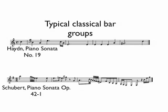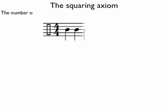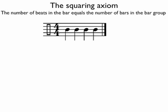But his observations led him to speculate about the logical consequences of using power series in music. And so we come to what could be called the squaring axiom, and that is: the number of beats in the bar equals the number of bars in the bar group.